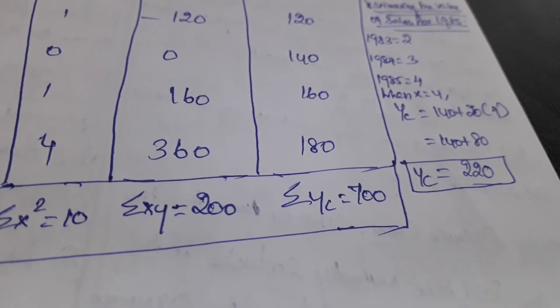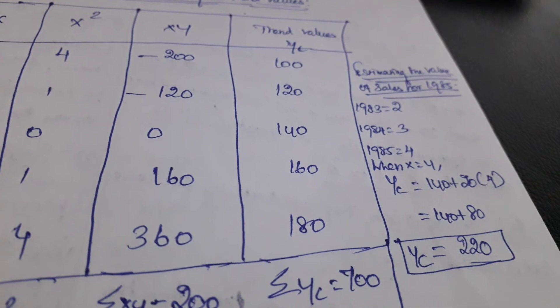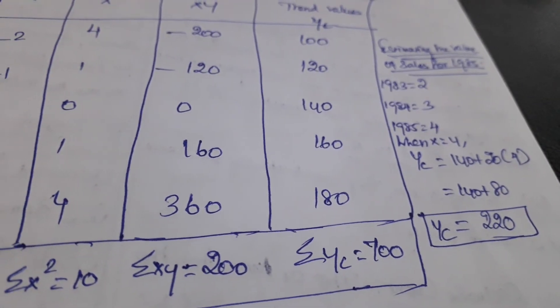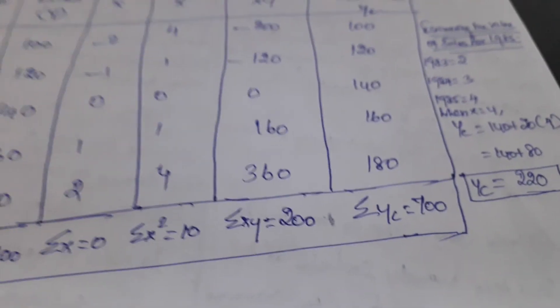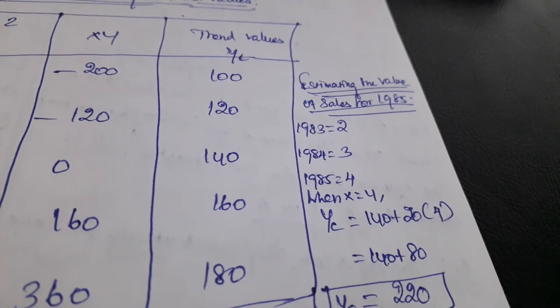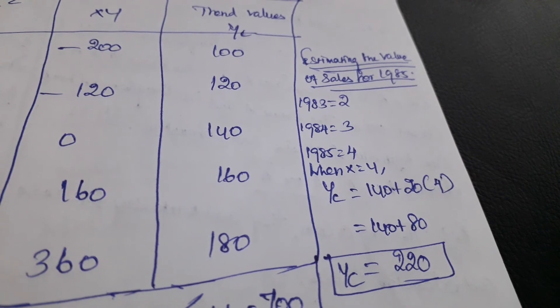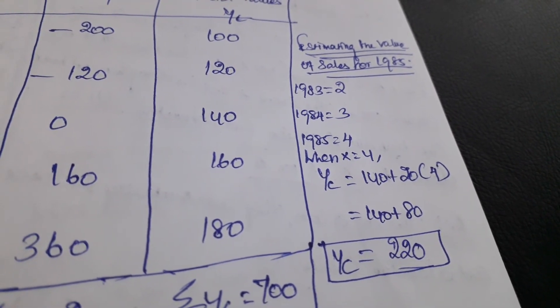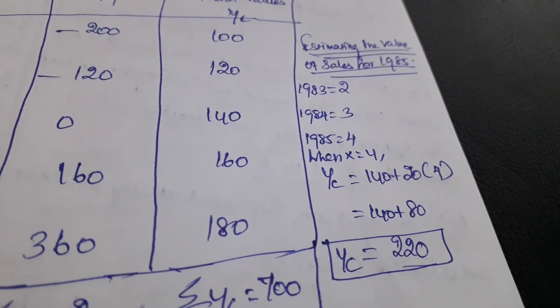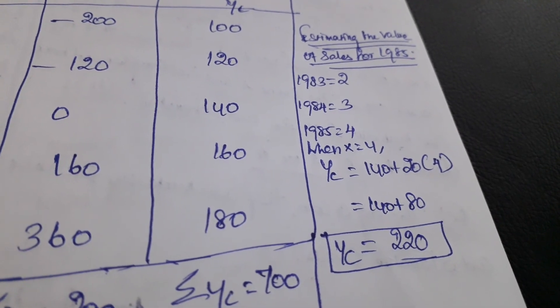Then we need to estimate the value of sales for the year 1985. We know the X variable of 1983 is 2, so 1984 would be 3, and 1985 would be 4. We need to find the estimation value of 1985, so the X variable is 4. So Yc = 140 + 20(4).